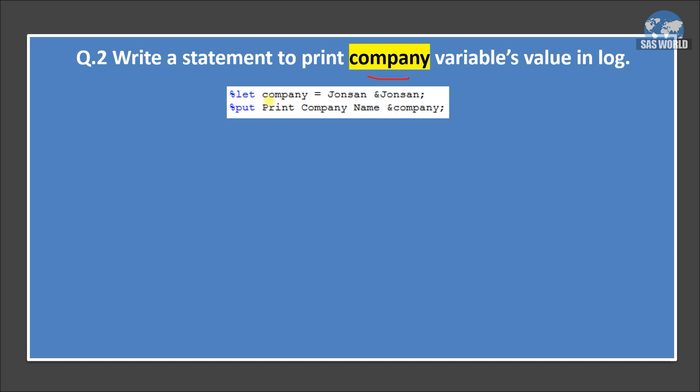So we are creating one macro variable company and we are assigning value Johnson and Johnson. So here if you can see clearly, I hope you understand that part that we are using ampersand Johnson. When we apply ampersand before any character or string or text, SAS macro processor would think that we are trying to access or reference a macro variable. SAS would think that ampersand Johnson is a macro variable and try to resolve it.